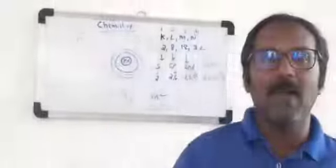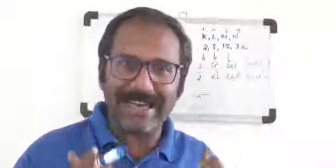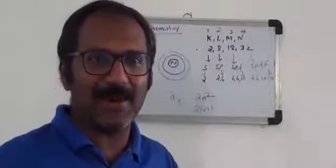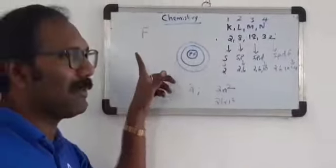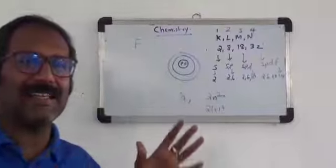This is the electron negative element. Electronegativity means the electron attract, the negative charge is attracted. So the most electron negative element is fluorine.